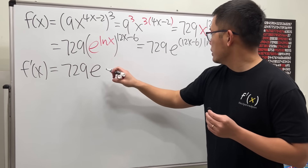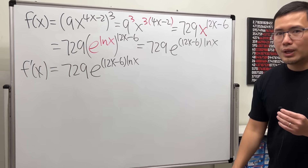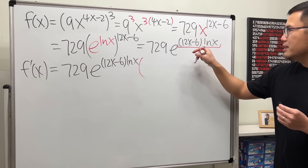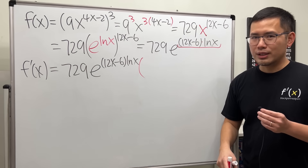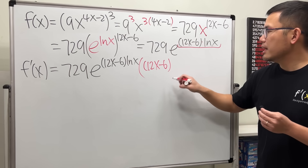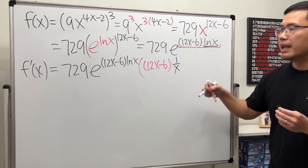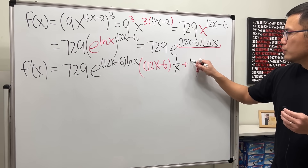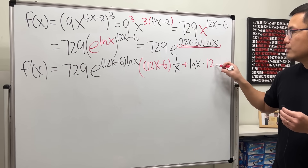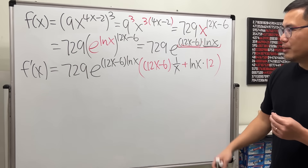When we take the derivative of e to the power of something, the exponential just repeats: e^((12x − 6) · ln x). Then we apply the chain rule to the exponent (12x − 6) · ln x, which is a product of two functions, so we use the product rule. Keep the first function (12x − 6) and multiply by the derivative of ln x, which is 1/x, then add ln x times the derivative of (12x − 6), which is 12.